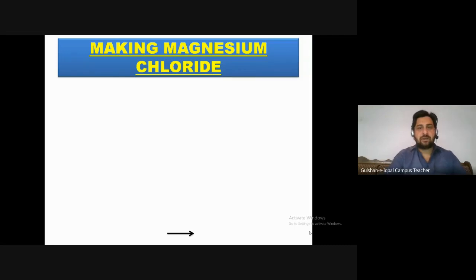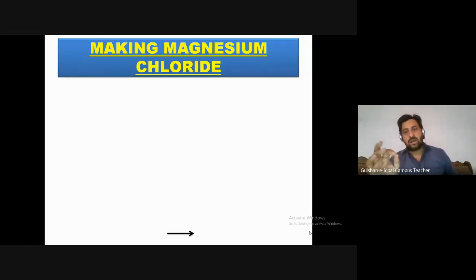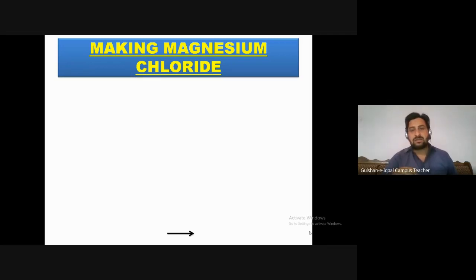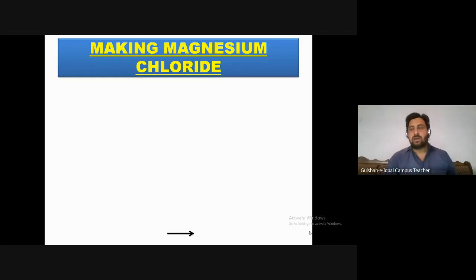Now we are moving to our next topic: Making Magnesium Chloride. Magnesium chloride is a salt, and we are going to see how we make it in the laboratory. How do we make magnesium chloride in the laboratory?